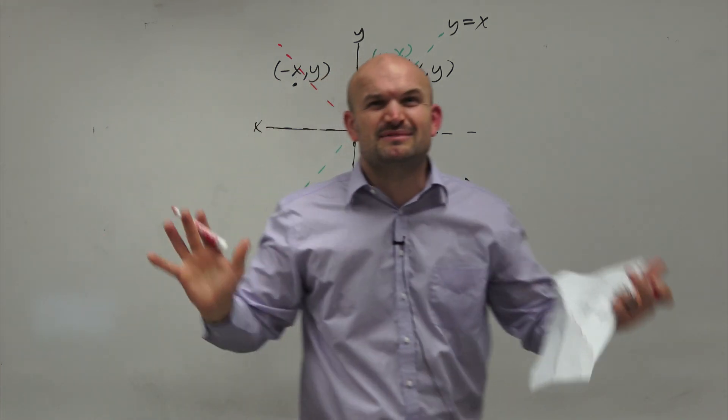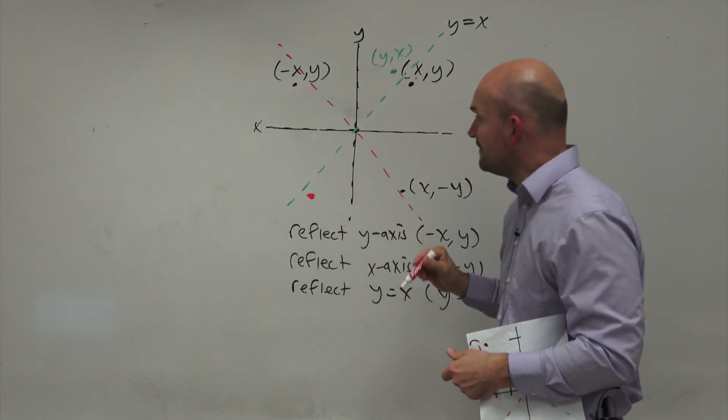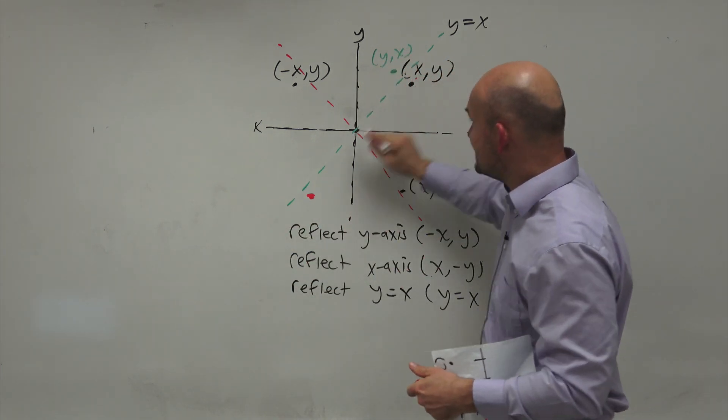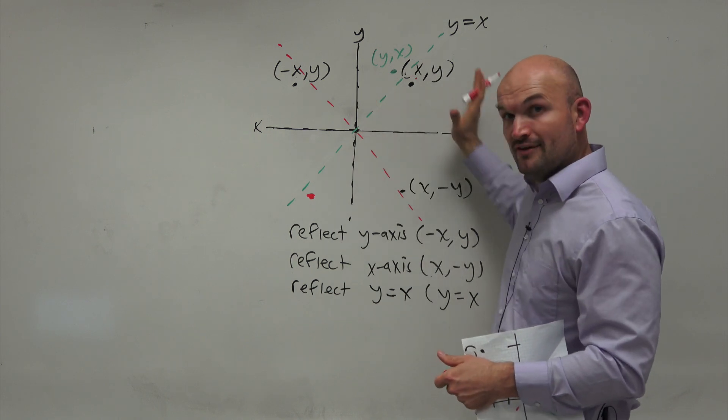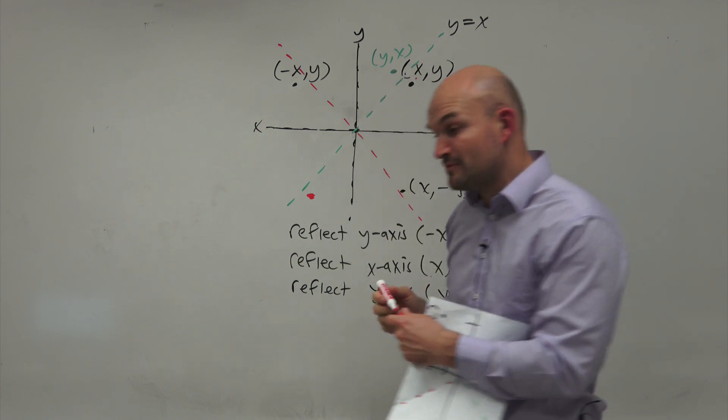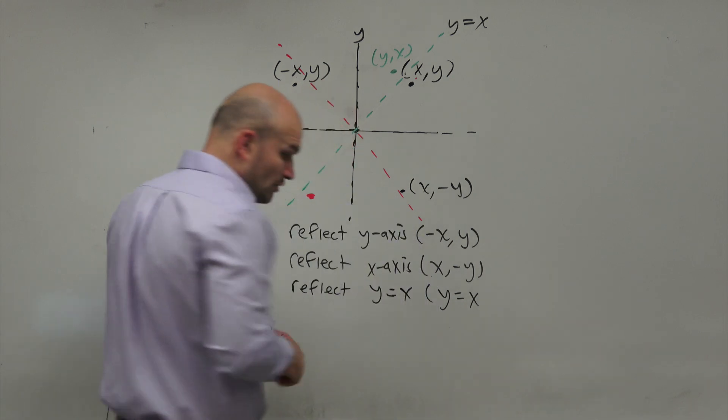If I was going to estimate, I would estimate it to be right around there. And again, you can see that it's not going to be the same distance away and vertical distance away, but it's going to be that swapped version. So my X and Y coordinates are going to swap.